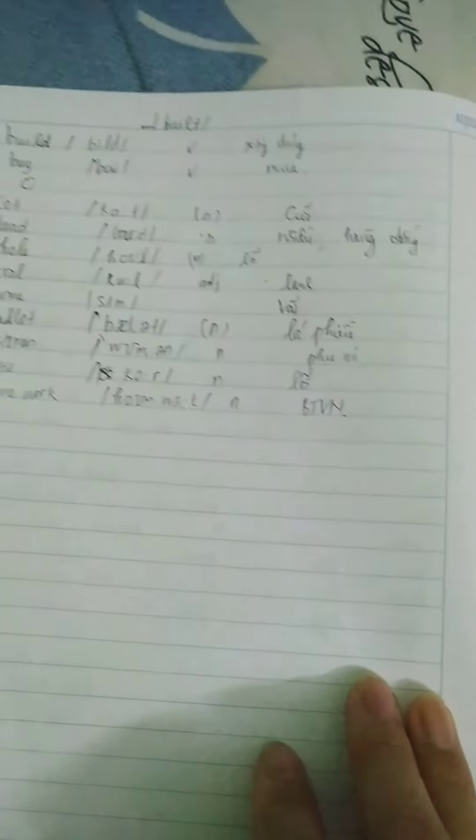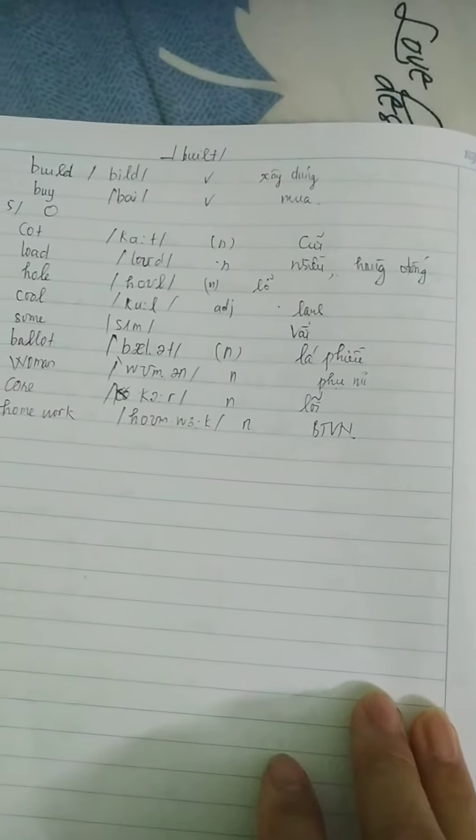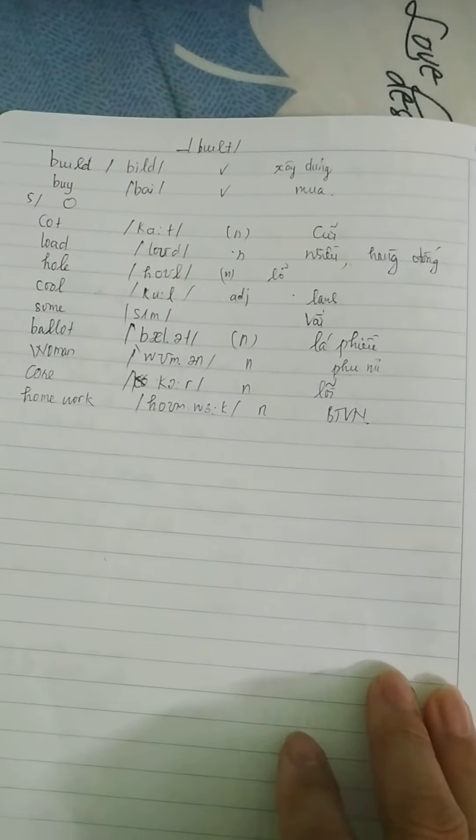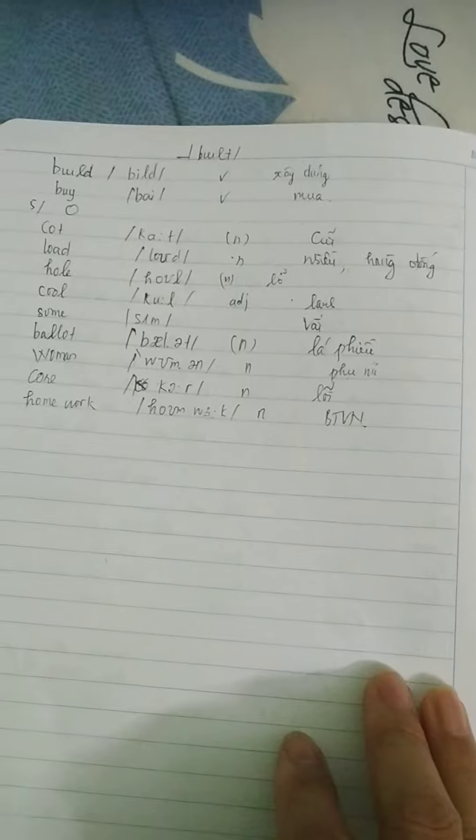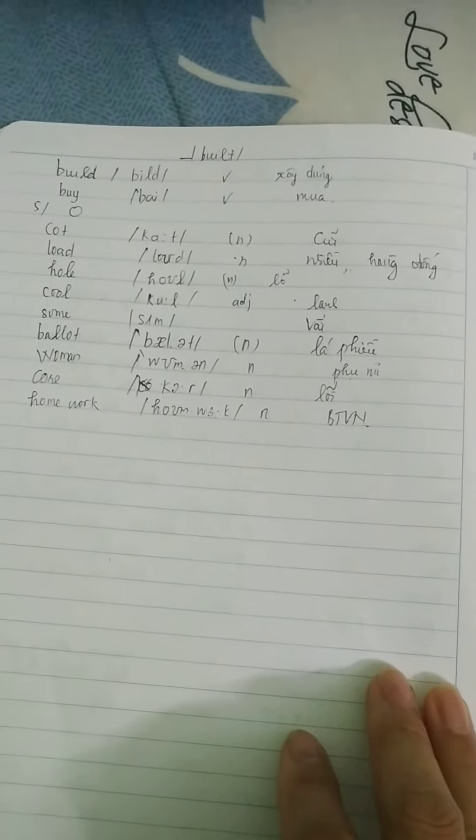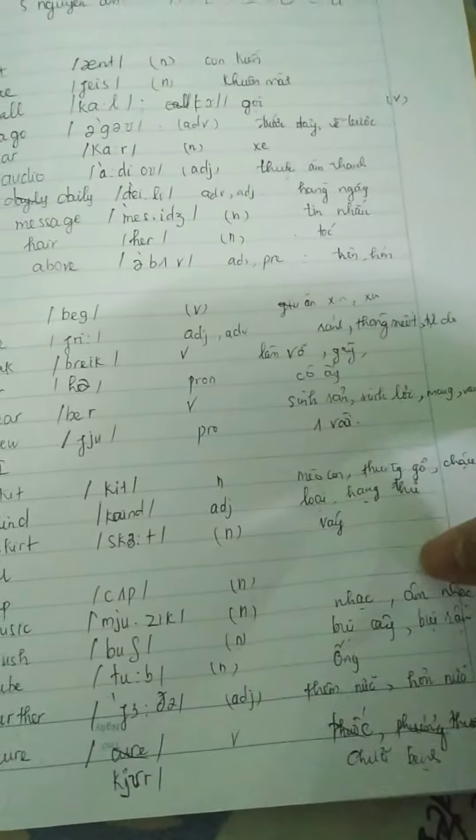Homework. Vậy ta về nhà. Lõi phụ nữ là phiếu, vài, lạnh, lỗ, nhiều, hàng đống, củi, mua, xây dựng, chữa bệnh.